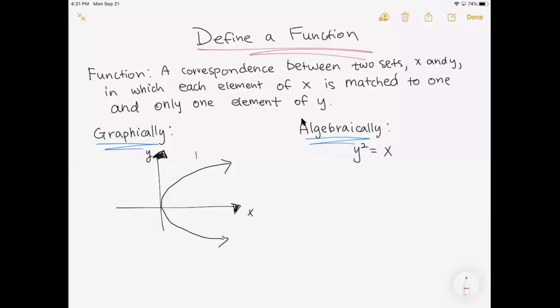So let's look at it graphically. If I draw a vertical line test, we know that my x value is repeating twice. So for example, if that was two, if x equals two, we have two comma y value and then two comma negative y. Two is repeating twice. So graphically, this is not a function.